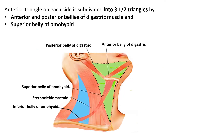The anterior triangle is divided into three and a half triangles. Only half of the submental triangle is present on either side since it occupies the median region. The muscles that divide the anterior triangle are those with two bellies — in the neck, these are the digastric muscle and the omohyoid muscle. The superior belly of the omohyoid divides the anterior triangle into different subdivisions, while the inferior belly of the omohyoid subdivides the posterior triangle into a larger occipital triangle and a smaller subclavian triangle.